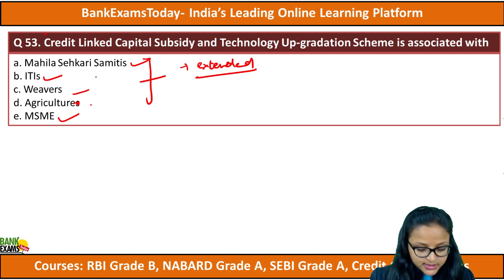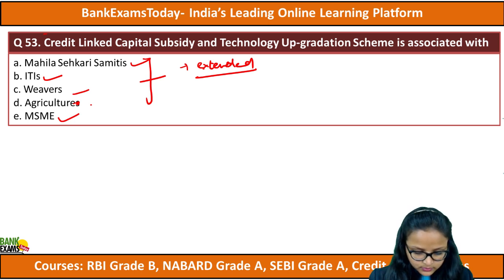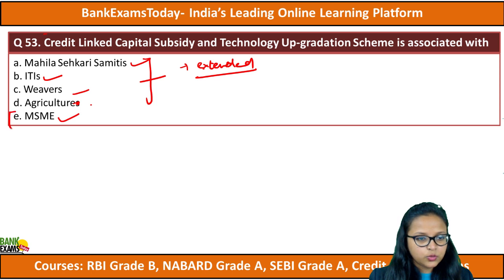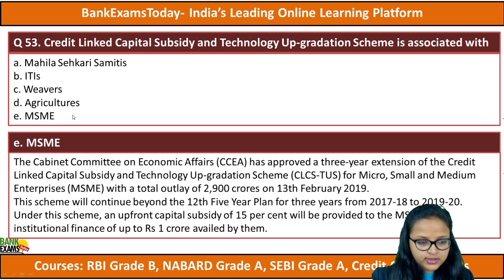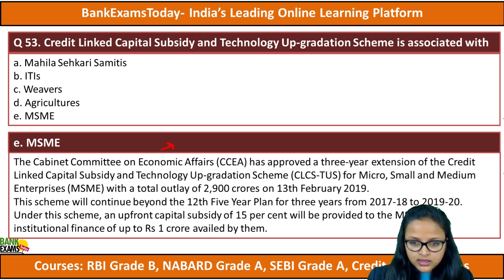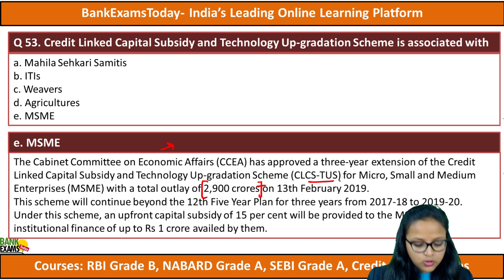The scheme is related to MSMEs. The cabinet committee recently approved the extension of this scheme — CLCS-TUS — for micro, small and medium enterprises with a total outlay of 2,900 crore rupees on 13th February 2019. If you haven't read about this scheme, please revise and read it.